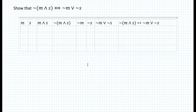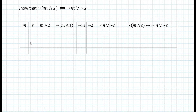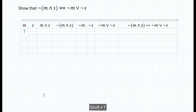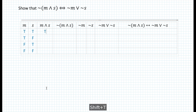Here's the truth table. Let's look at all possible combinations. For the first entry we enter true, true, false, false, and for the second entry true, false, true, false — that ensures all combinations of M and S. The conjunction M and S is simply true, false, false, false. Remember, in a conjunction both conjuncts must be true for the conjunction to be true. Now in the fourth column we have the negation of the quantity M and S, so we negate the previous column: true becomes false and the false values become true.